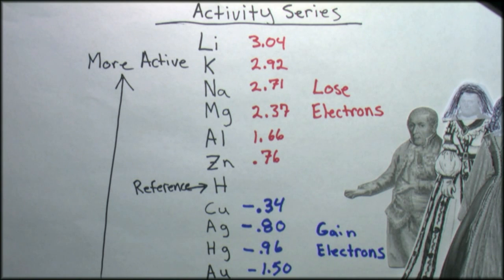In a perfect world you can use these numbers to calculate out the voltage of your cell depending on the electrodes you choose. If we chose zinc and copper the difference would be about one volt.